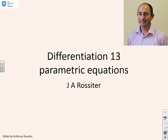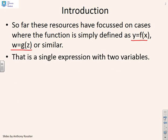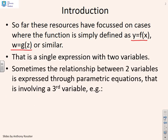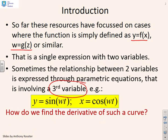This video looks at how to differentiate parametric equations. So far, the resources have mainly focused on cases where a function is simply defined in the form y equals f(x) or w equals g(z) — that is, a single expression with two variables. Sometimes, however, the relationship between two variables is expressed through parametric equations involving a third variable. For example, y equals sine(ωt) and x equals cos(ωt), where t is the third variable. How do we find the derivative of the curve y against x?